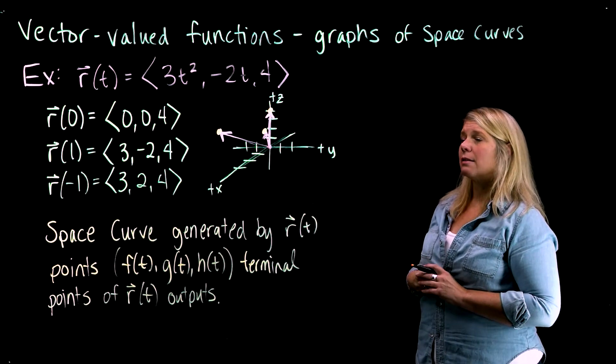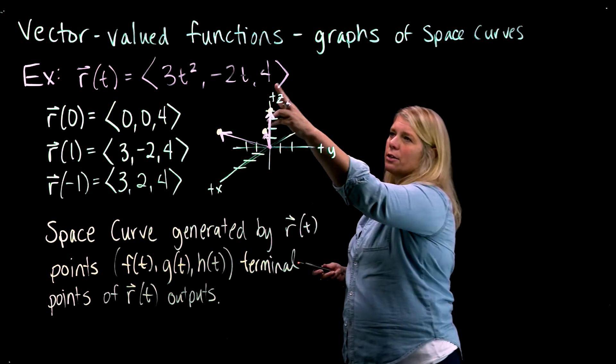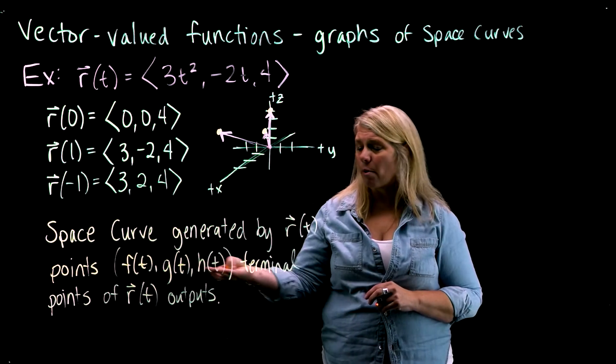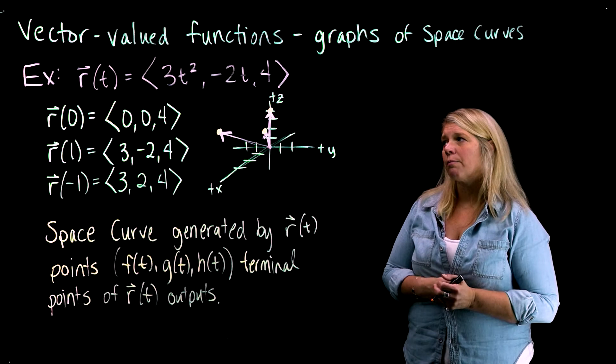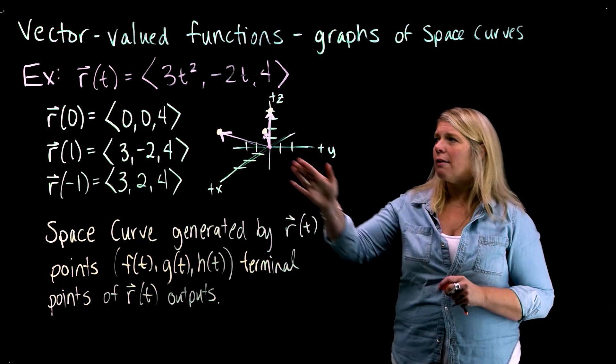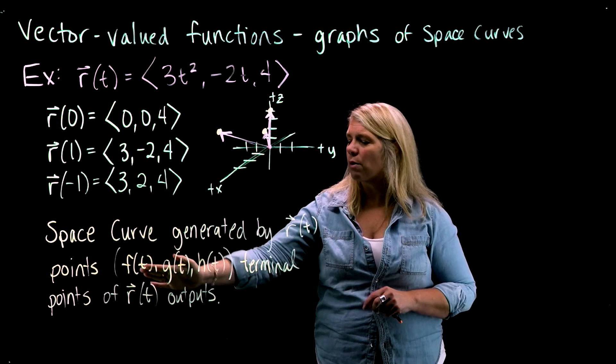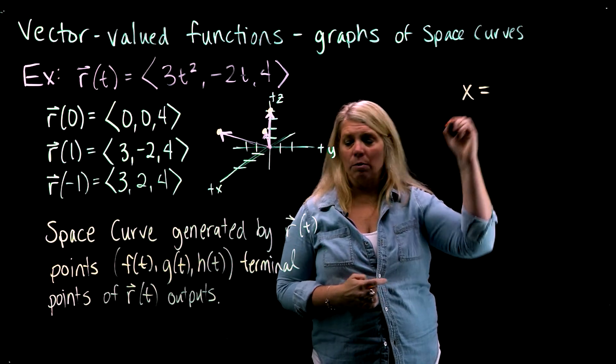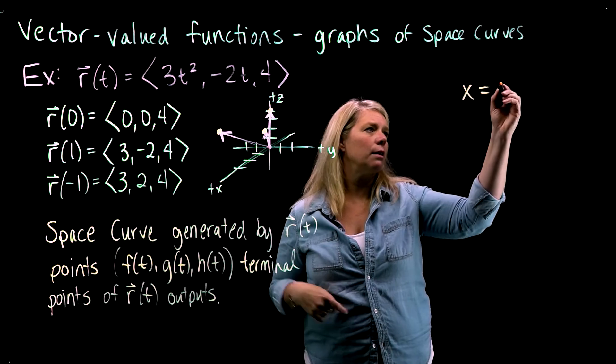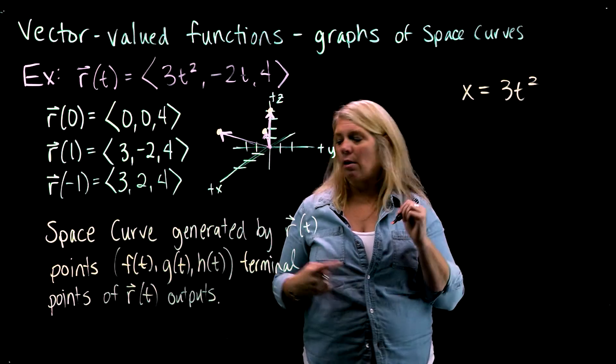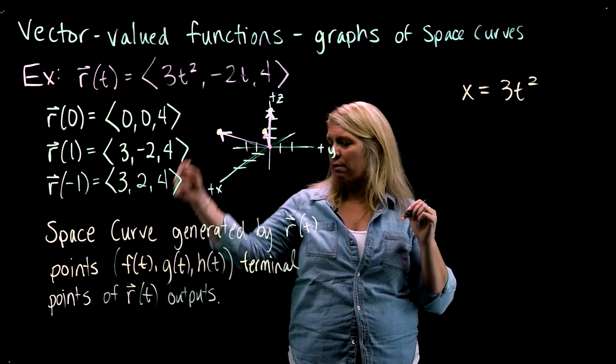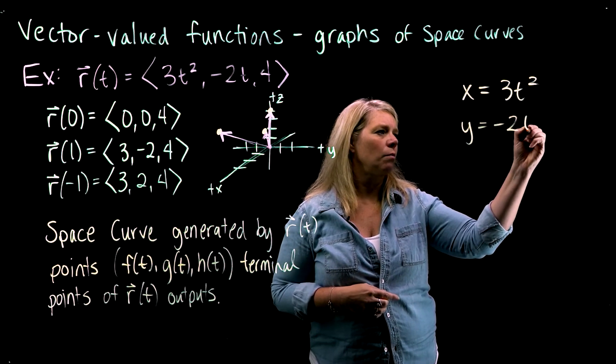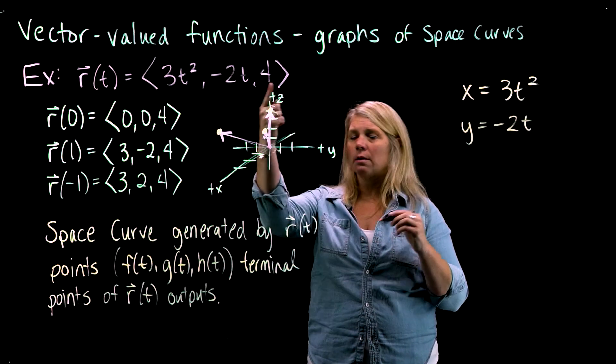Part of why this one is simple is because this third component of that vector, or the z-coordinate of our points, is always going to be 4. So if I think about this, instead of components of a vector as coordinates of points, then maybe I write x equals, for the x-coordinate of a point, 3t squared, and y equals, for the y-coordinate, negative 2t, and z equals 4.